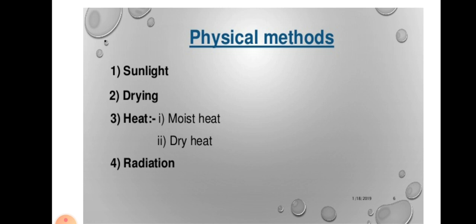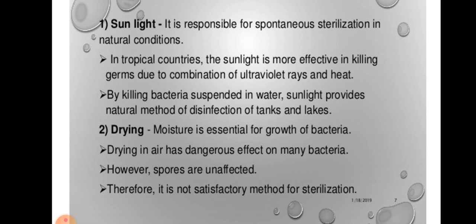The physical method of sterilization can be obtained by four mechanisms: sunlight, drying, heat and radiation. Heat can be applied in two forms: moist heat or dry heat. Sunlight is responsible for spontaneous sterilization. In tropical countries, sunlight is more effective in killing germs due to the combination of UV rays and heat. By killing bacteria suspended in water, sunlight provides a natural method of disinfection of tanks and lakes. The second method is drying. Moisture is essential for growth of bacteria. Drying in air has a damaging effect on many bacteria. However, spores are unaffected by this method. Therefore, it is not a satisfactory method for sterilization.